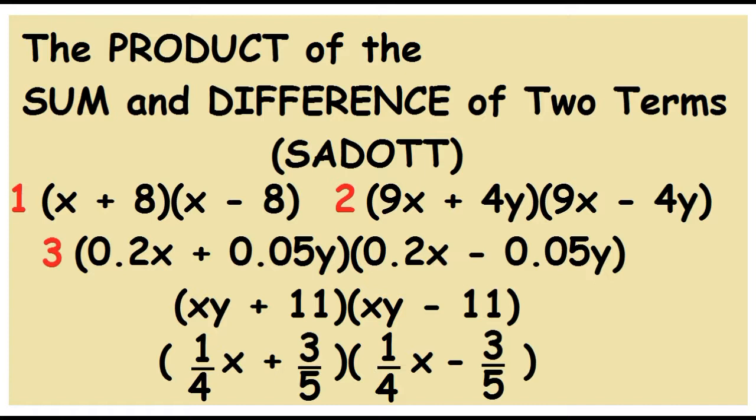3. The quantity 0.2x plus 0.05y times the quantity 0.2x minus 0.05y. 4. The quantity xy plus 11 times the quantity xy minus 11. And 5. The quantity one-fourth x plus 3 over 5 times the quantity one-fourth x minus 3 over 5.